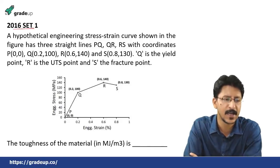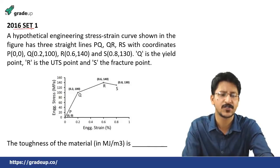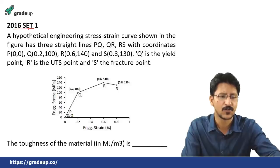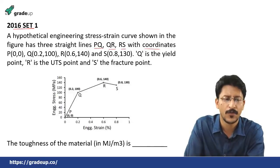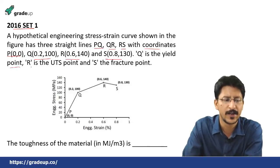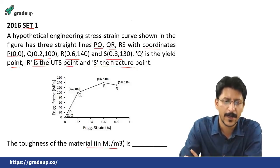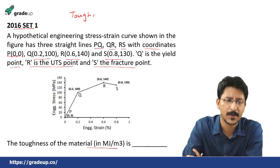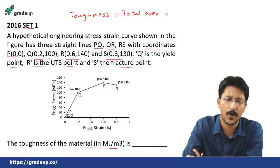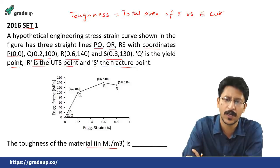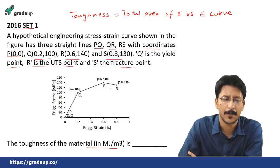GATE 2016, Set 1: A hypothetical engineering stress-strain curve has three straight lines PQ, QR, RS with given coordinates. Q is the yield point, R is the UTS point, and S is the fracture point. The toughness of the material in megajoule per metre cube is asked. Toughness equals the total area of the sigma versus epsilon curve up to the fracture point.